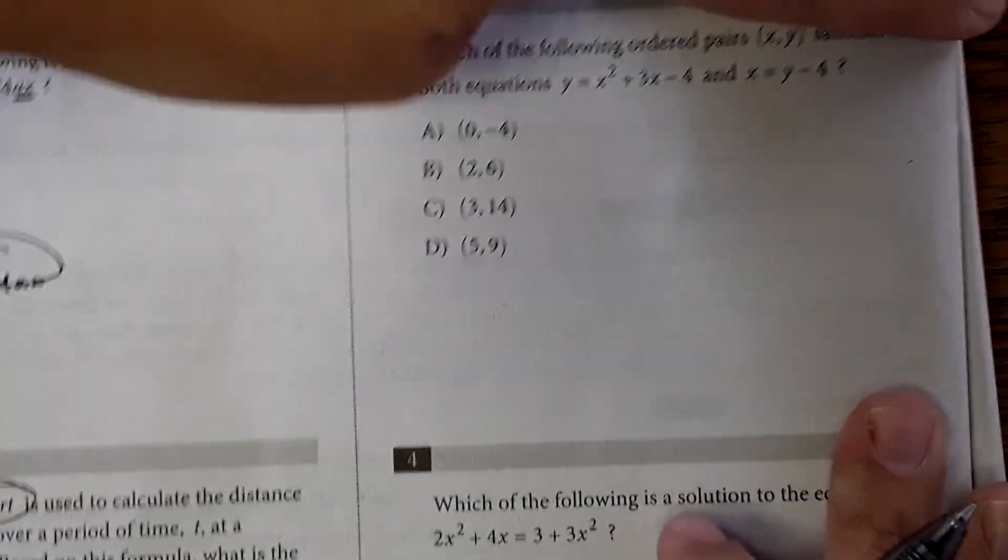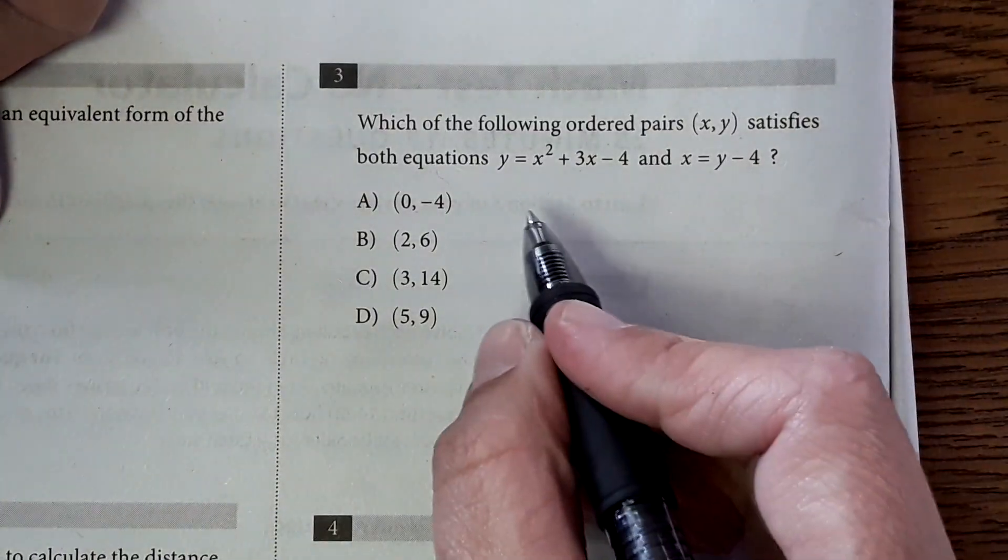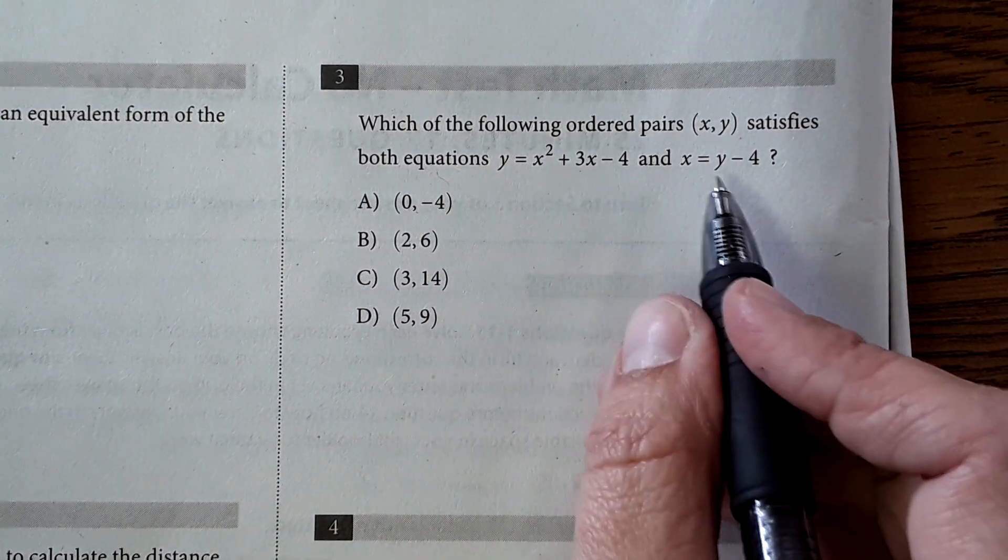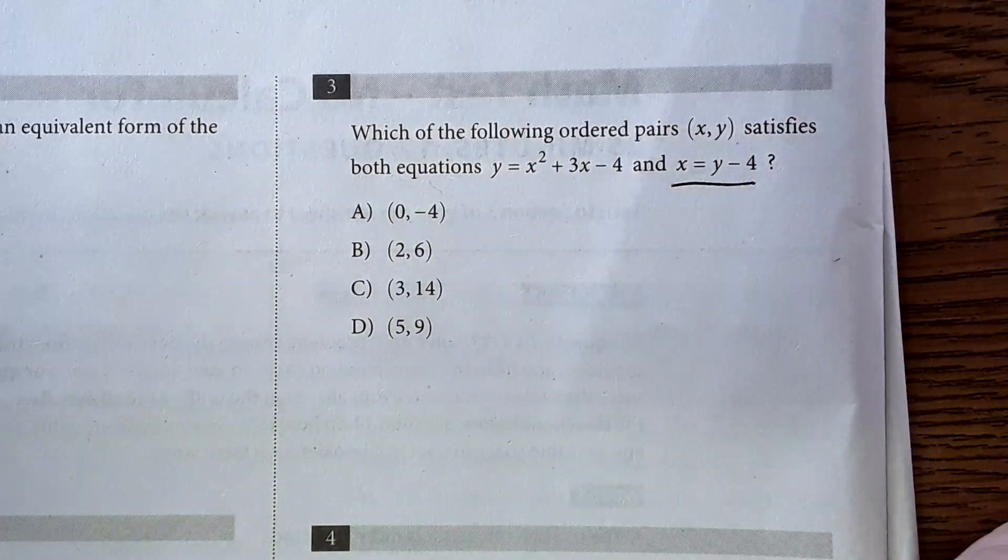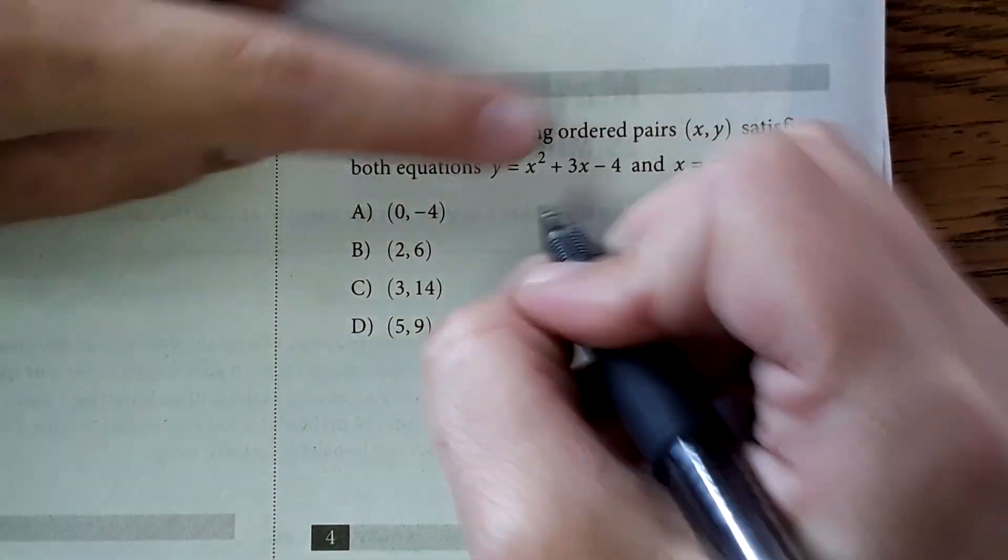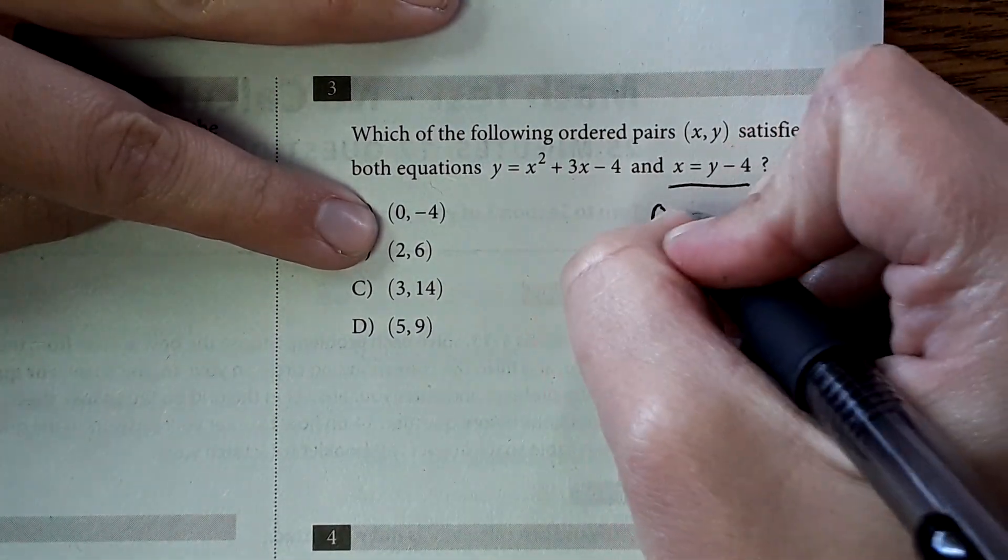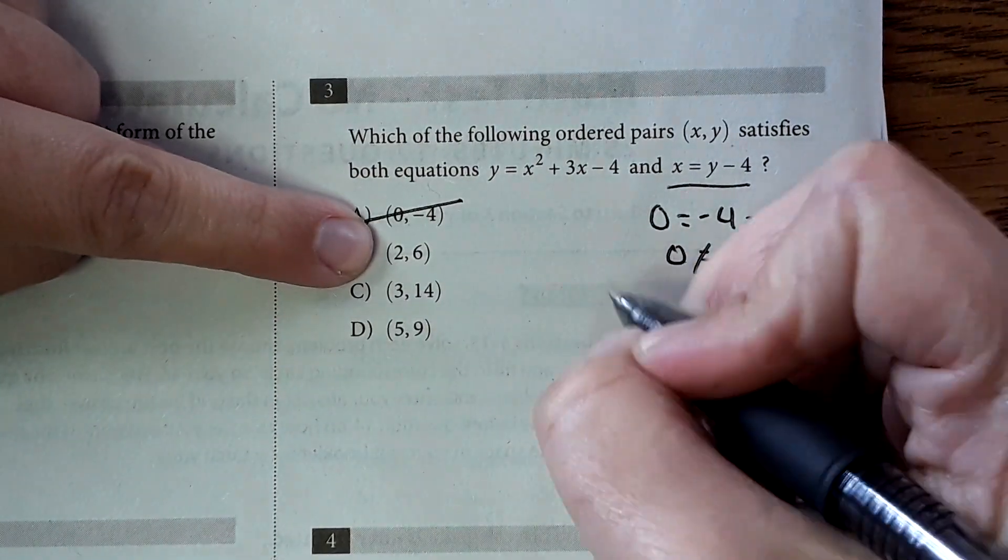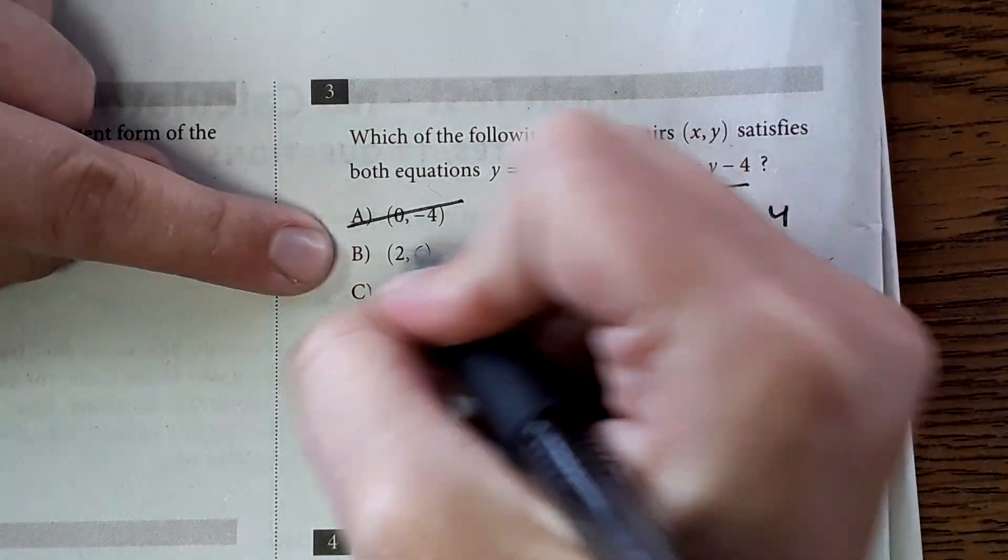Then over here, number three, which of the following ordered pairs x, y satisfies both equations? So for this one, what I'm going to do is go through the answer choices and plug it into the equations and see which pair of coordinates satisfy both of these equations. To make this go quickly, I'm going to start with the easier of the equations over here, x equals y minus four. And I'm going to plug these coordinates into this equation. If it works, then I'm also going to plug it into this one to see if it works. So for the first set of coordinates, I have zero negative four. So zero equals negative four minus four. I get zero equals negative eight. That doesn't work. So therefore, A is not a correct answer. The next one, I get two equals six minus four. Two does equal six minus four. Two equals two. So this is a possible answer choice.